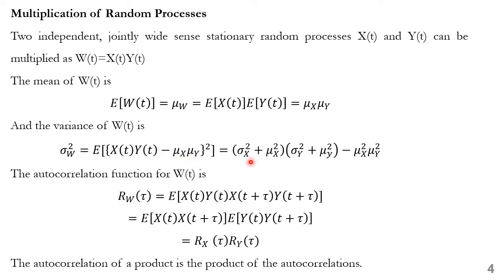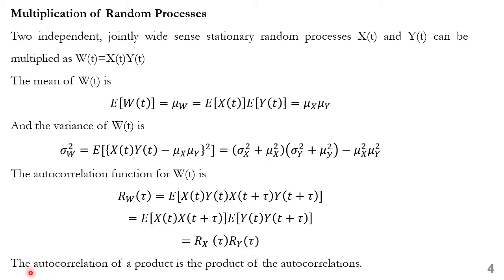The variance is given by (σ_x² + μ_x²)(σ_y² + μ_y²) − μ_x²·μ_y². The autocorrelation function for w(t) is R_w(τ) = E[x(t)·y(t)·x(t+τ)·y(t+τ)] = E[x(t)·x(t+τ)] · E[y(t)·y(t+τ)] = R_x(τ) · R_y(τ). Thus the autocorrelation of a product is the product of the autocorrelations.